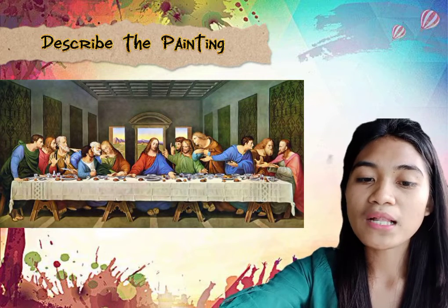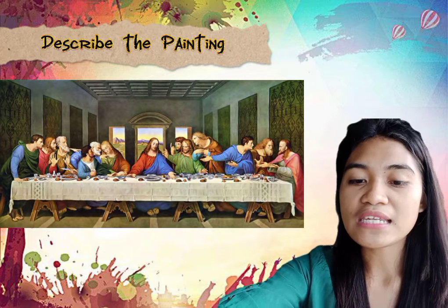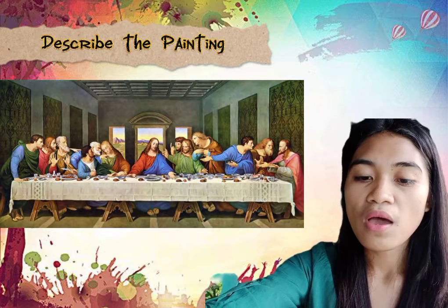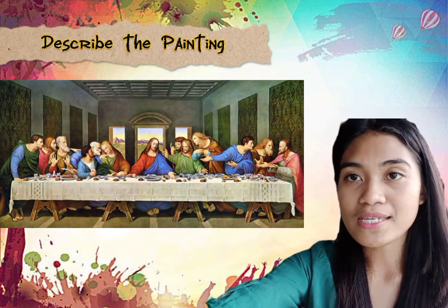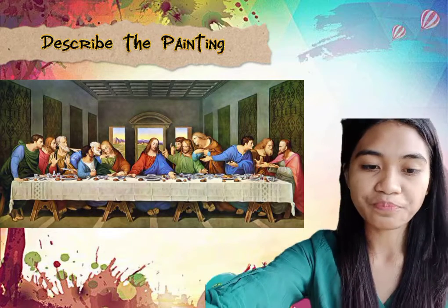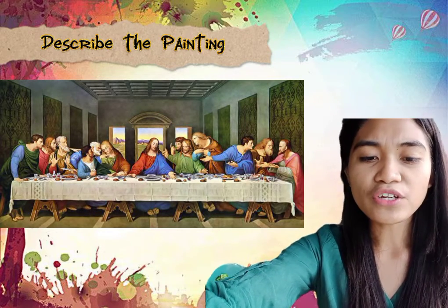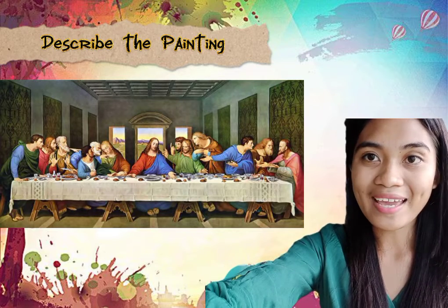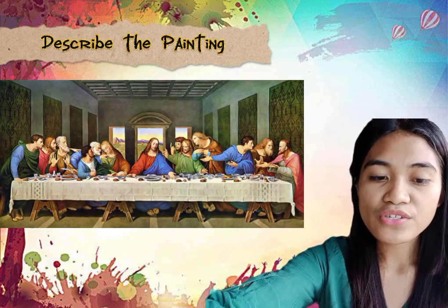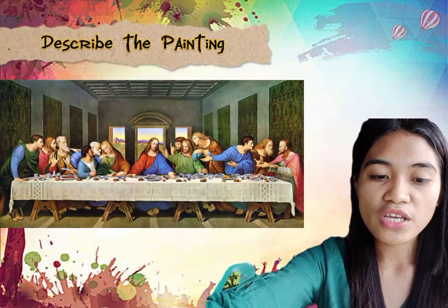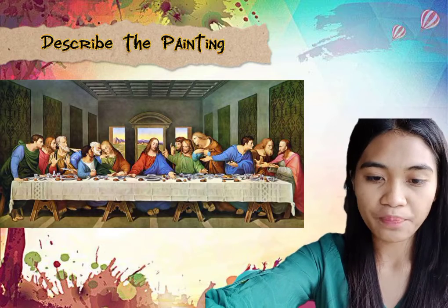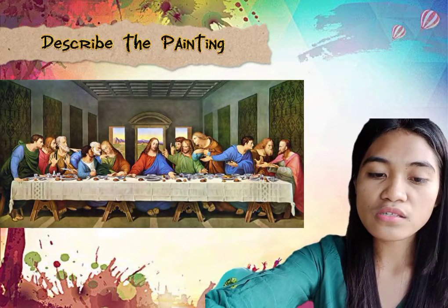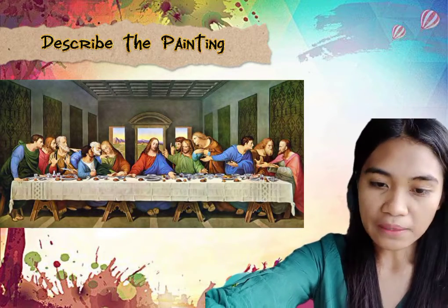The Last Supper is the final meal eaten by Jesus and his disciples in an upper room in Jerusalem on the occasion of the Eucharist institution. There is a pattern of the arrangement of the apostles and the windows behind them. The apostles are arranged in four groups of three.